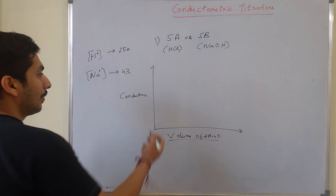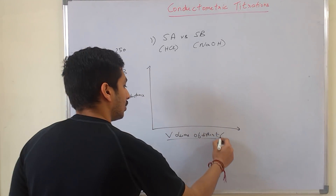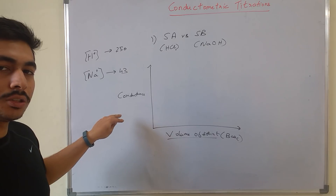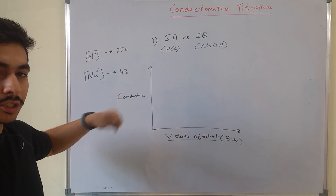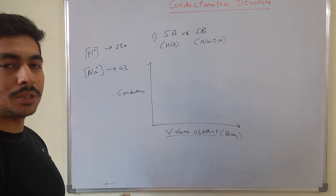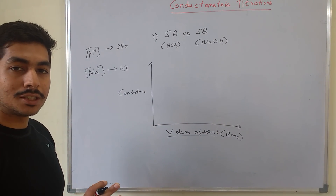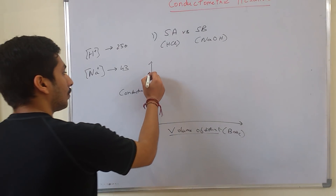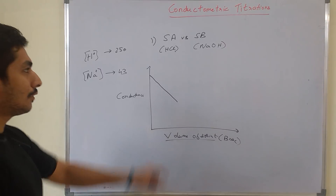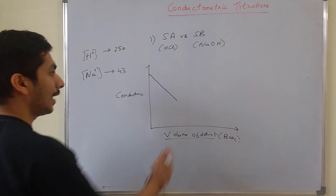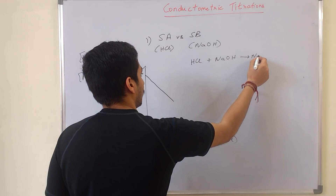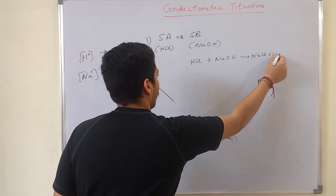Let's say we have base in the burette and acid in the conical flask — we are measuring the conductance of the acid while titrating it with base. HCl almost completely ionizes into H⁺ and Cl⁻, so the conductance starts very high. Once you titrate it with NaOH, the conductance gradually starts falling down, because the neutralization reaction HCl + NaOH → NaCl + H₂O is occurring.